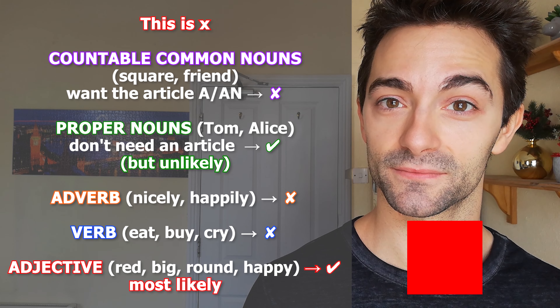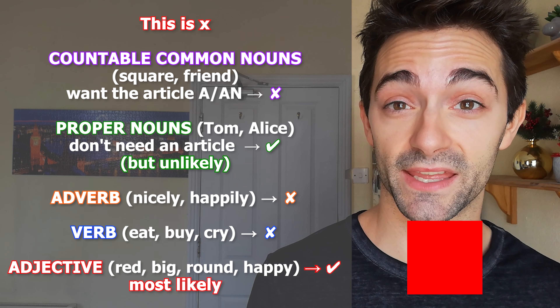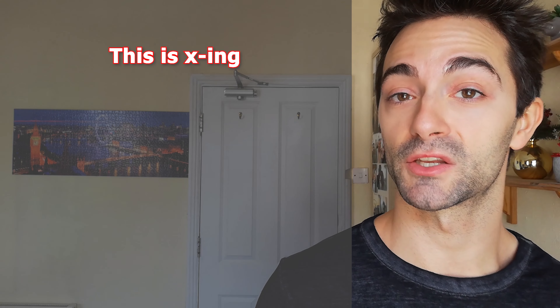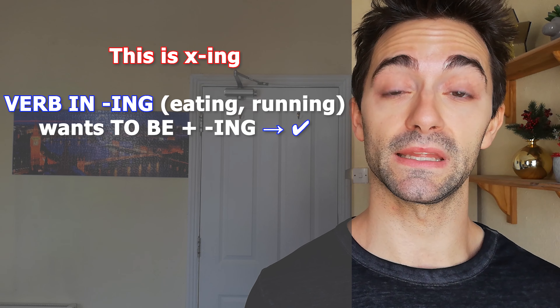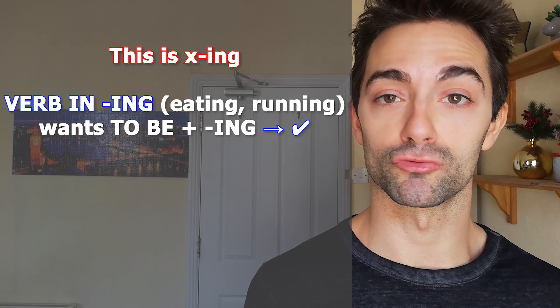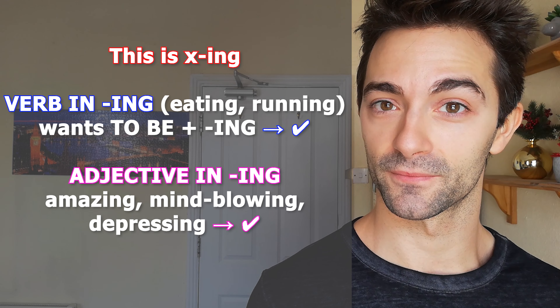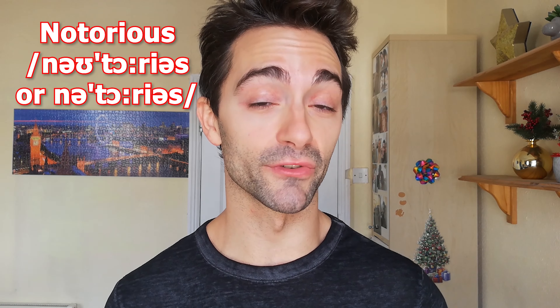It can't be an adverb like 'nicely' or 'happily,' it can't be a verb like 'cry,' 'buy,' or 'eat,' but it can be an adjective like 'nice' or 'happy,' and this is the most likely option for this word. Based on that, you can't really tell exactly what I'm saying but at least you can guess that the chances are that I'm talking about its shape or its colour. If you hear 'this is blah-blah-ing,' you have two options: it could be a present continuous — the verb 'to be' plus a verb in -ing, so 'eating,' 'running,' 'buying' — or it could be an adjective ending in -ing like 'amazing,' 'mind-blowing,' or 'depressing.' I understand that in something taken out of context it's very hard, but this already helps you rule out what something logically isn't.